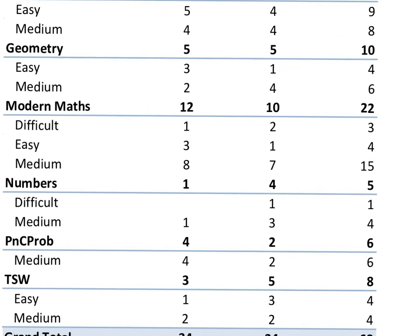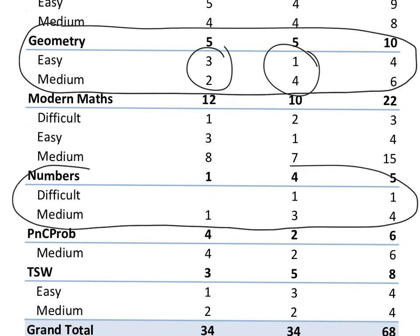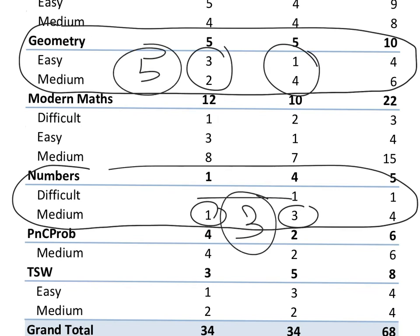So geometry if I talk about, there are 5 questions in slot 1 and 5 questions in slot 2. So 3 easy, 2 medium, 1 easy, 4 medium in slot 1, slot 2. So 5 questions on geometry. And numbers, difficult and medium. So difficult 1 question and medium 1 and 3 questions respectively, lot number 1, lot number 4. So on an average, 3 questions from numbers and 5 questions on geometry. So 8 questions are going to be there in your exam, 7-8 questions from geometry and numbers. So combine them together as one section, so that we can focus on that.